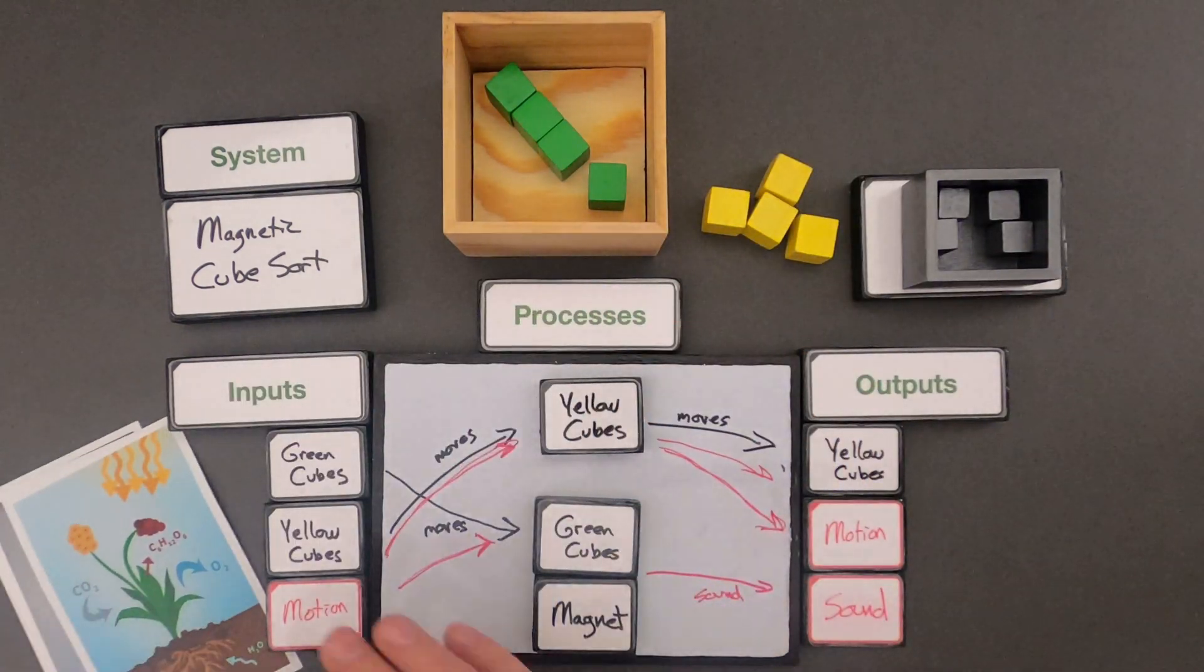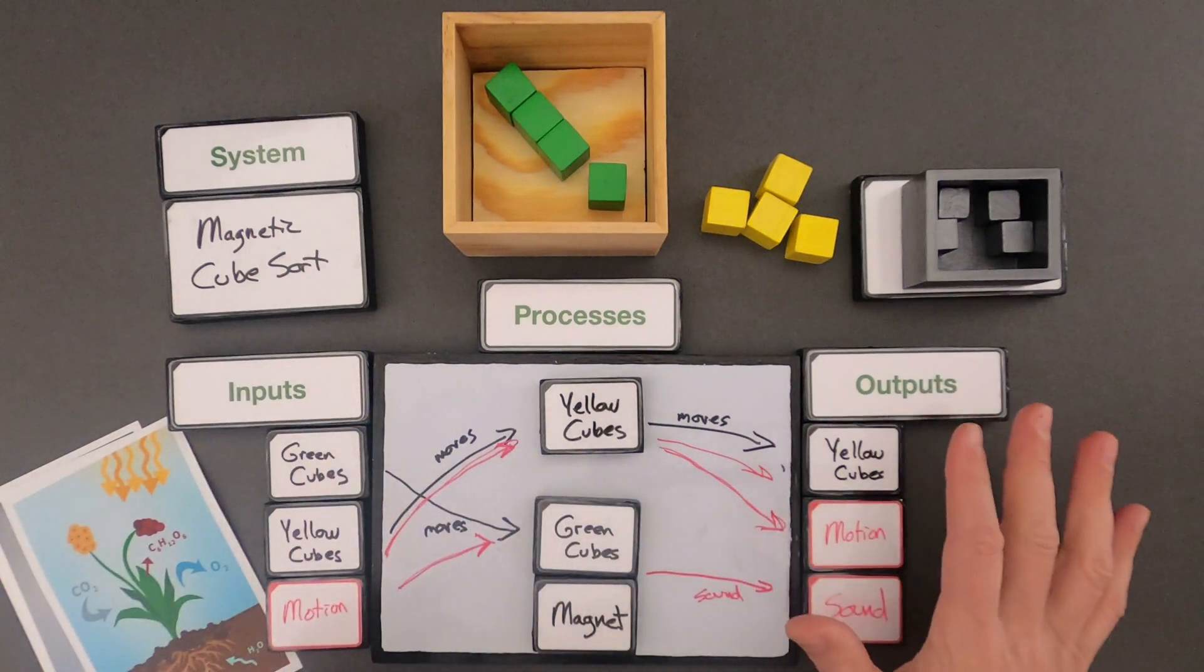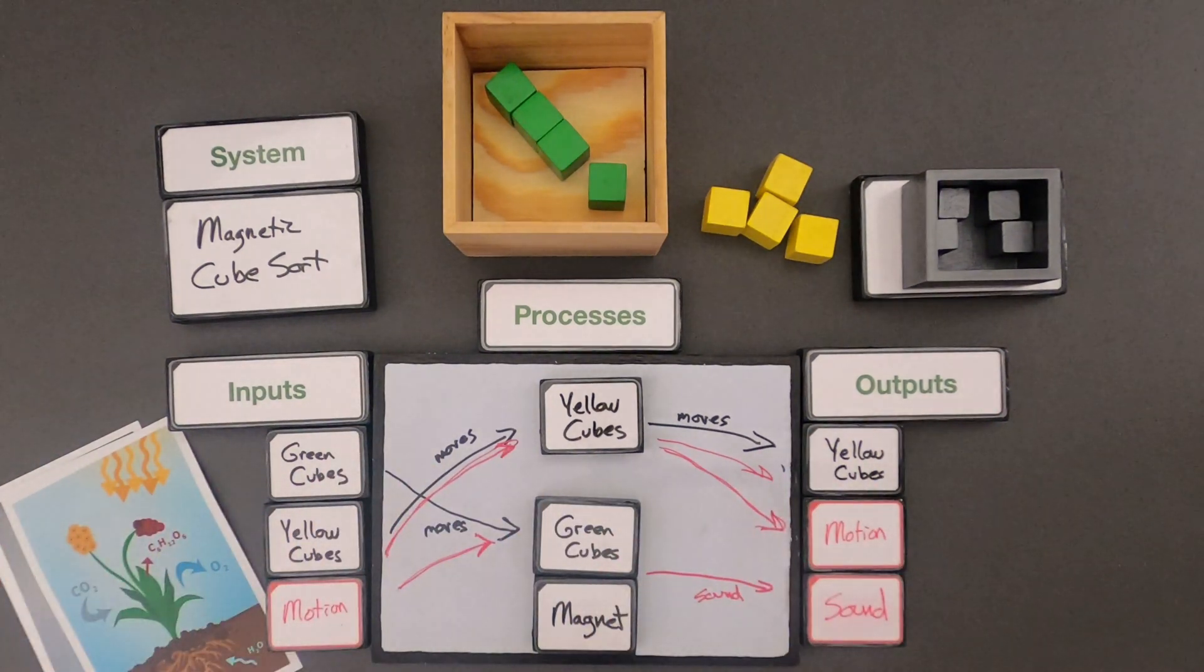The key thing when you're doing this is always identify what are the inputs, what are the outputs, and then trying to show how motion and energy are flowing through the system. So that's level three of systems, inputs, processes, and outputs, and I hope that's helpful.